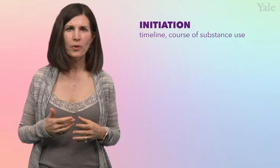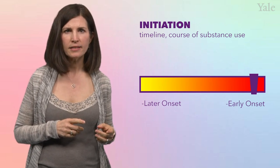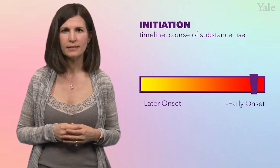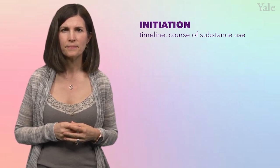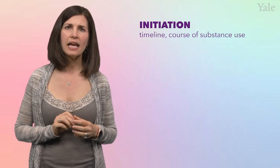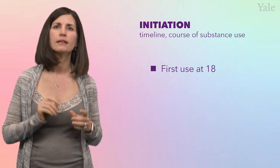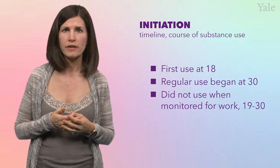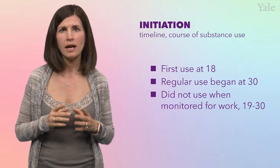Okay, back to rip-tear. Next up is I for initiation, where you want to understand the timeline or the course of her substance use. In general, earlier onset and longer course of disease should lead you to consider intensifying treatment. Remember, people who start using in adolescence tend to have more severe disease. When asked, Annabeth tells you that she first tried cocaine at age 18, but didn't start using cocaine regularly until age 30. Between 19 and 30 years old, she was employed as a truck driver and her drug use was regularly monitored. She didn't use cocaine one time during this period.